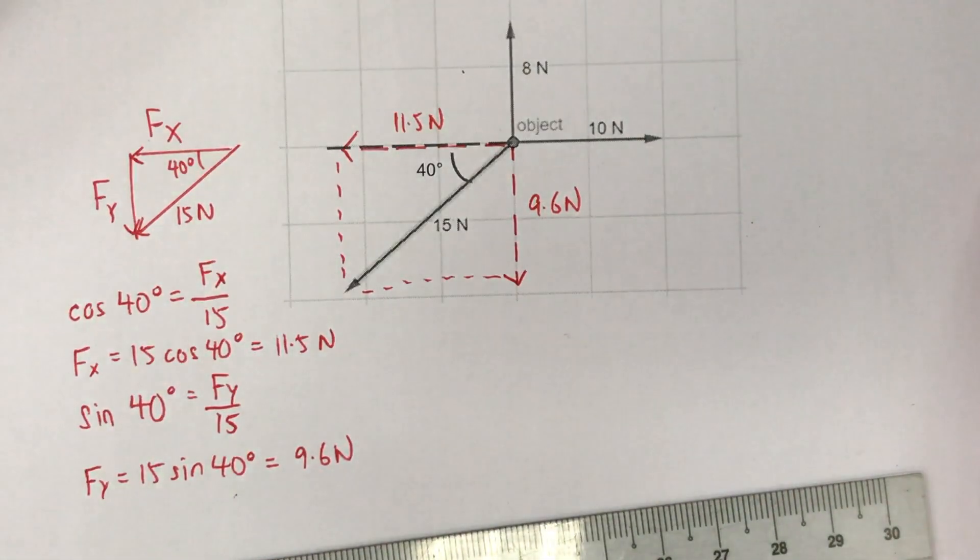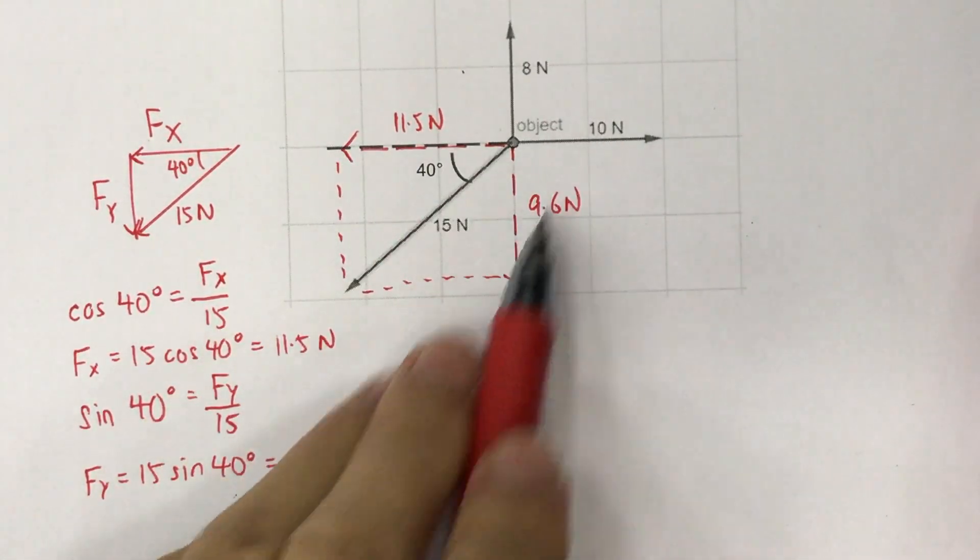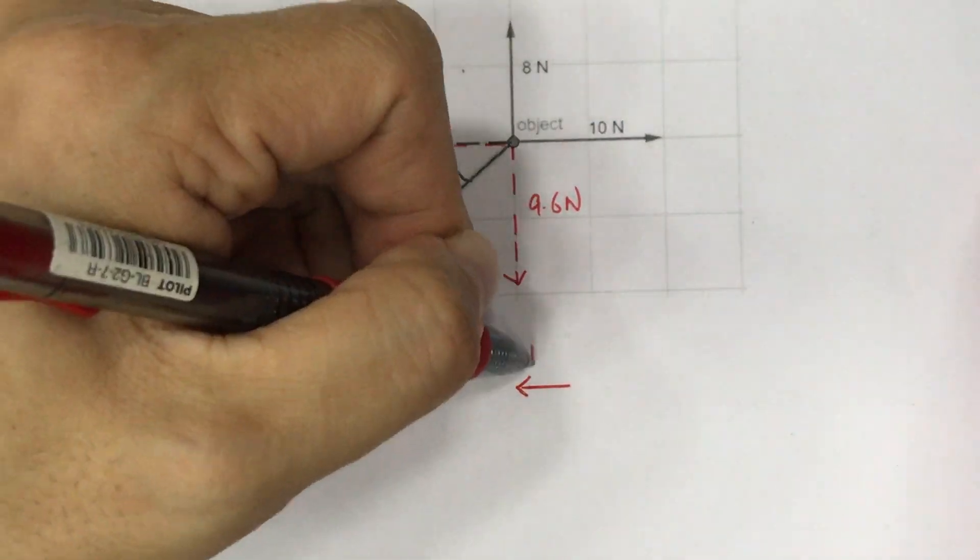So now we have 10N to the right and 11.5N to the left, which gives us a net force of 1.5N to the left.